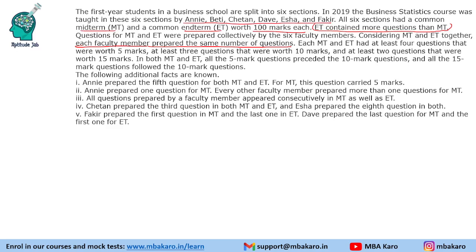Each MT and ET had at least 4 questions worth 5 marks, at least 3 questions worth 10 marks, and at least 2 questions worth 15 marks. In both MT and ET, all the 5-mark questions preceded the 10-mark questions, and the 15-mark questions followed the 10-mark questions.